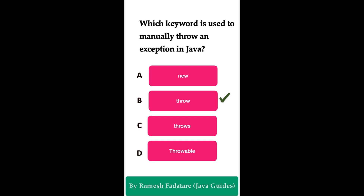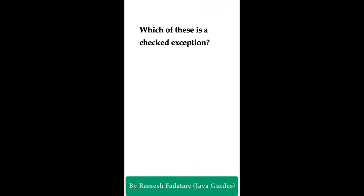The correct answer is Option B: throw keyword. In Java, the throw keyword is used to explicitly throw an exception. The new keyword is used to create an object of a class, and the throws keyword is used to declare an exception in a method signature. Throwable is a class, while throw is the keyword used to explicitly throw an exception. That's why the answer is Option B: throw.